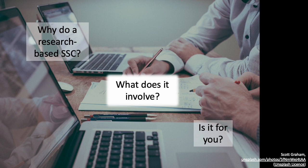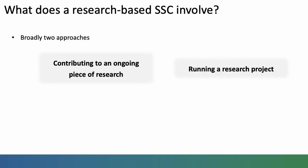So what does it involve? In my experience, there are broadly two approaches to a research-based SSC. The first is to contribute to an ongoing piece of research. For example, perhaps there is a systematic review already being conducted and there is an opportunity for students to contribute — perhaps by screening articles for inclusion or by extracting data from some of those articles. By working as part of a large team, it's possible to complete a really very helpful review.